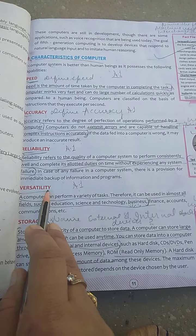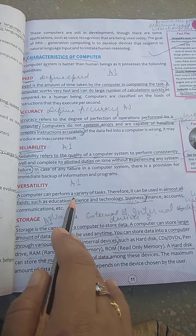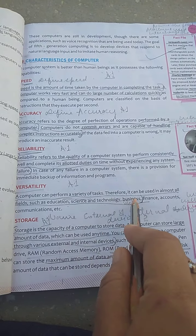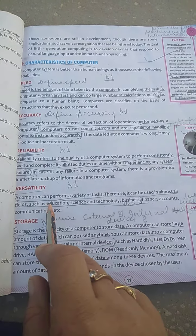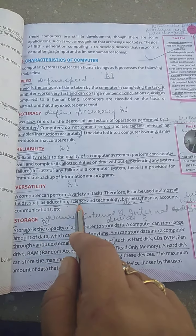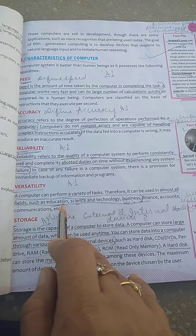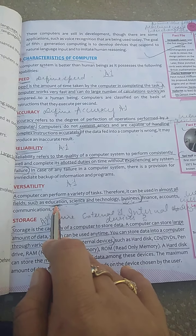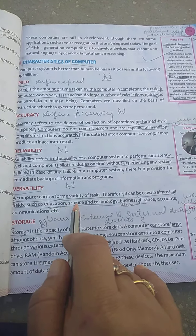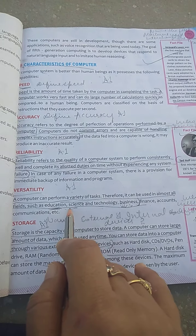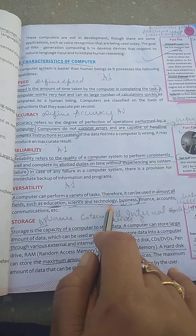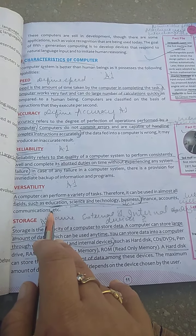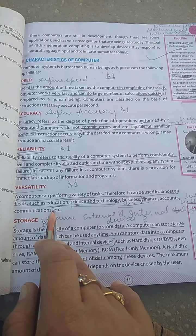Next is versatility. A computer performs a variety of tasks — many tasks at the same time. Therefore, it can be used in almost all fields: education, science, technology, and business. In education, teachers use computers to teach lesson plans and show presentations. In science and technology, scientists use them for creating new inventions. Business and other fields also use computers. That is why it is versatile.